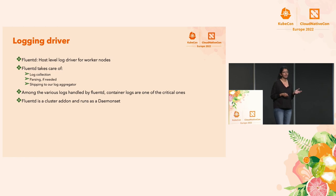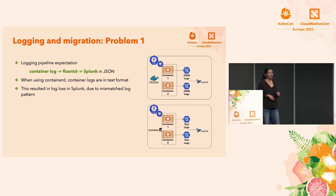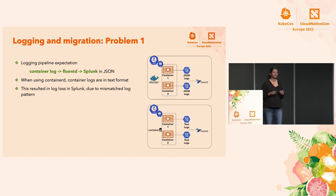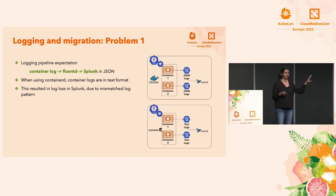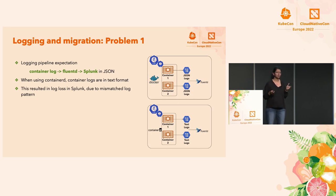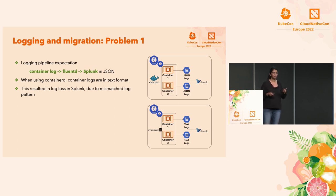FluentD runs as a daemon set and it's a cluster add-on. The problem was our entire logging pipeline had the assumption of JSON-formatted container logs, and ContainerD basically broke that assumption. Right from container logs to FluentD to how it reaches our Splunk servers, everything was expected to be in JSON format. This was because JSON offered better performance. Because of this change in log format, there was log loss because portions of our pipeline did not recognize the new format, which was a big no-no.